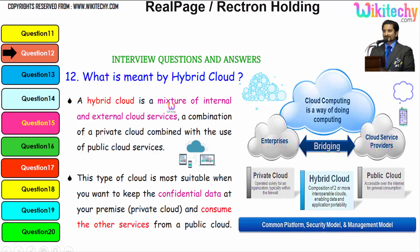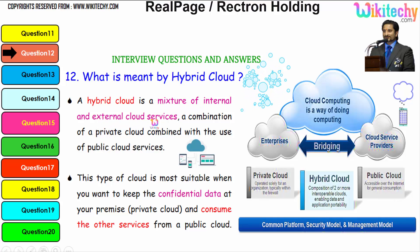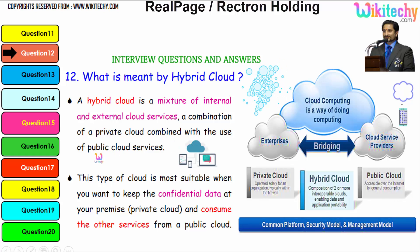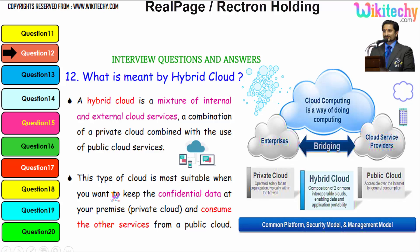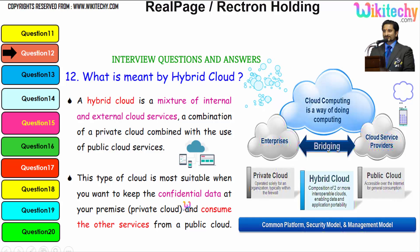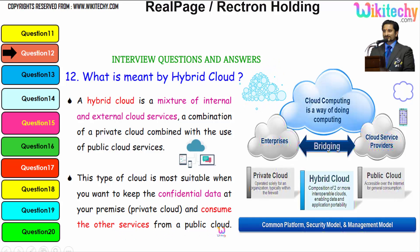By definition, a hybrid cloud is a mixture of internal and external cloud services — a combination of a private cloud combined with the use of public cloud services. This type of cloud is most suitable when you want to keep confidential data at your premises and consume other services from a public cloud.